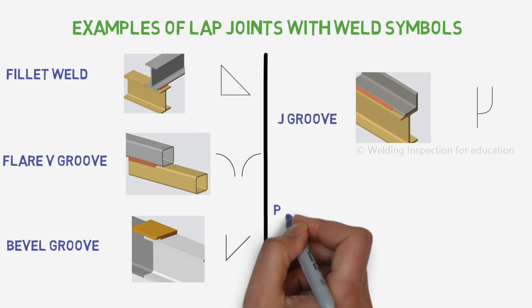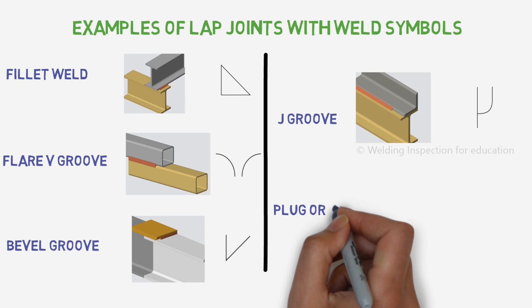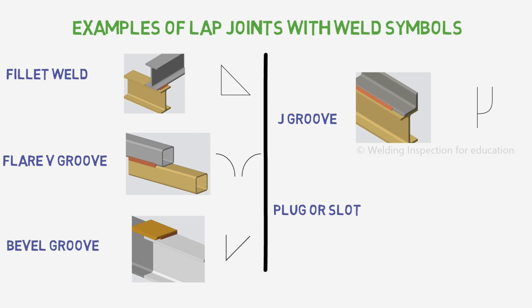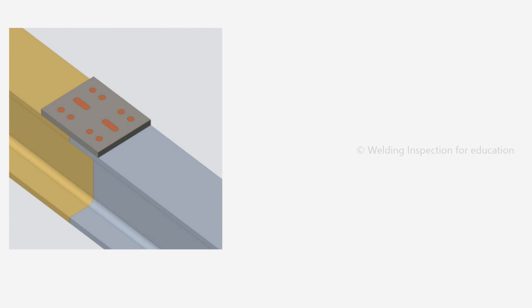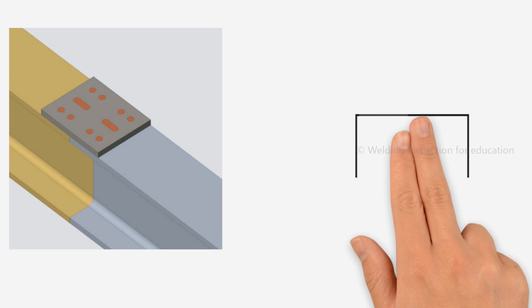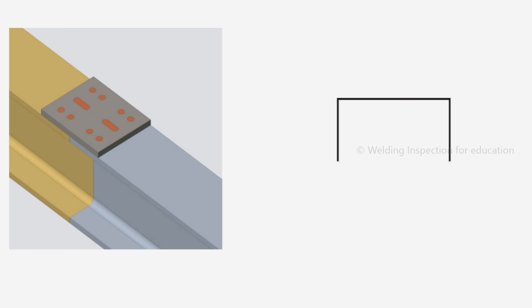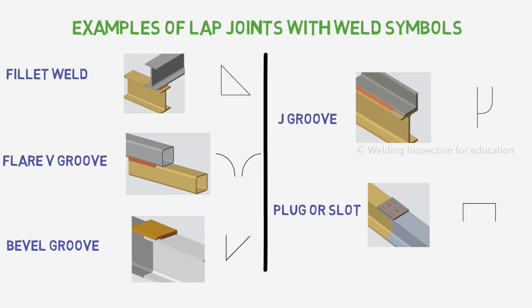Lap joint plug and slot weld: plug or slot welding is filling out the plug or slot with weld metal on the lap joint.